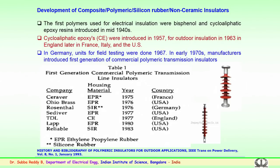Initially manufacturers introduced the first generation of commercial polymeric transmission insulators in the 1970s, used for both transmission and distribution. Several companies were involved; most still exist. Ceraver, which used EPR — ethylene propylene rubber — as housing material, introduced theirs around 1975 in France.